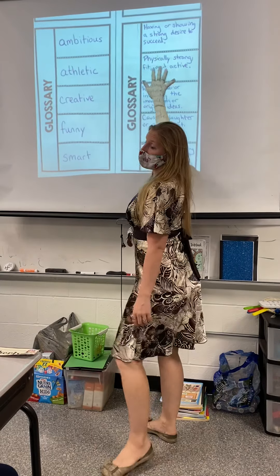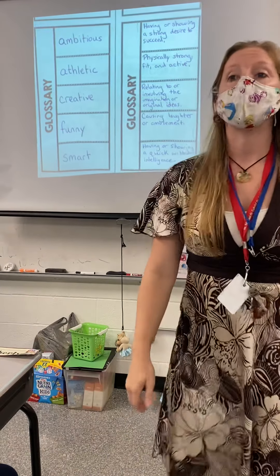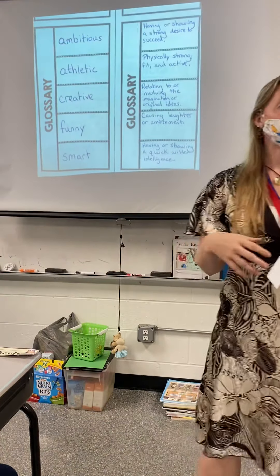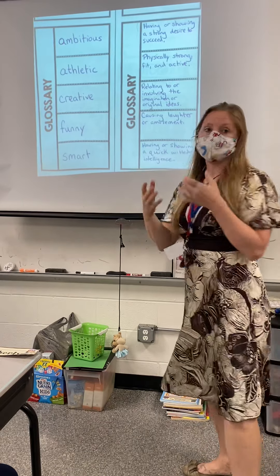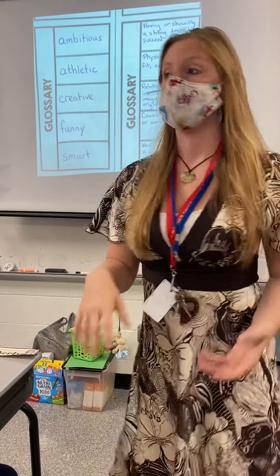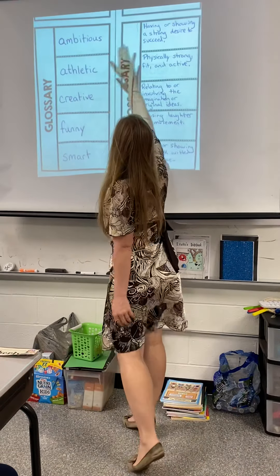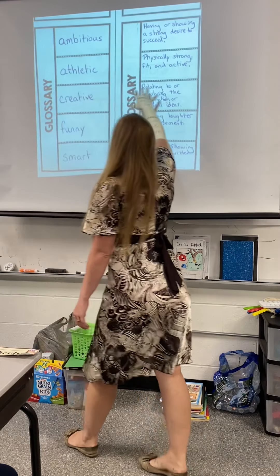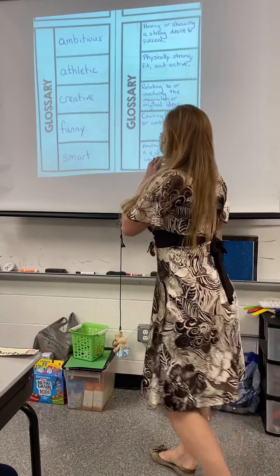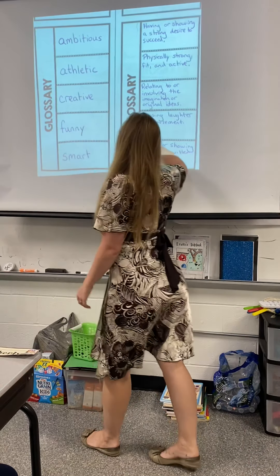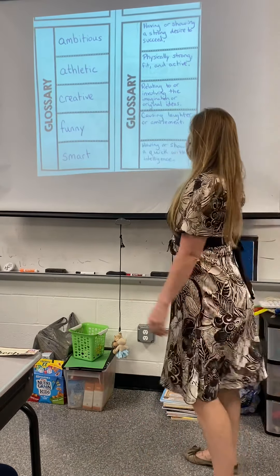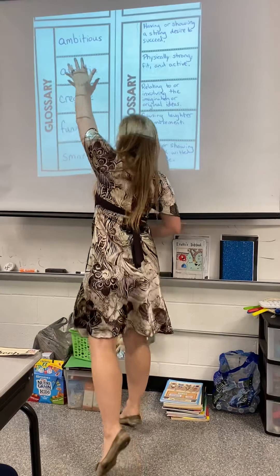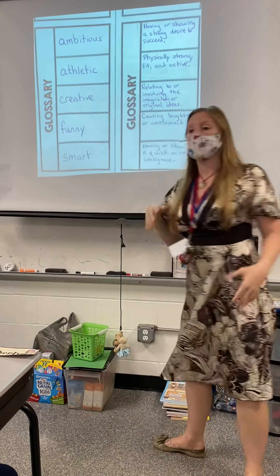Some of you obviously picked words you already know the meaning of, but that does not mean you just write any definition — I want you to actually use your dictionaries. Here are my examples: 'ambitious' — having or showing a strong desire to succeed; 'athletic' — physically strong, fit, and active; 'creative' — relating to or involving the imagination or original ideas; 'funny' — causing laughter or amusement; and 'smart' — having or showing a quick-witted intelligence. I found those in my dictionary, put them in alphabetical order, and wrote the definitions. That's our glossary.